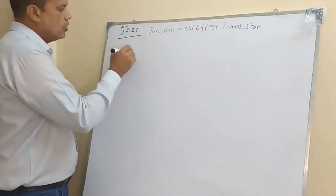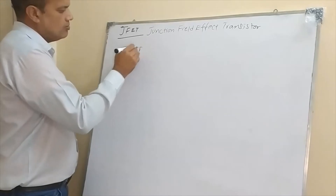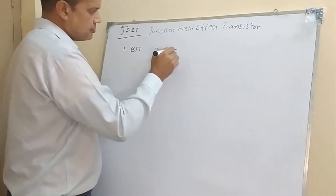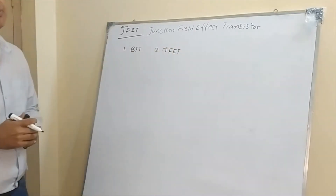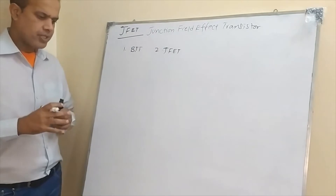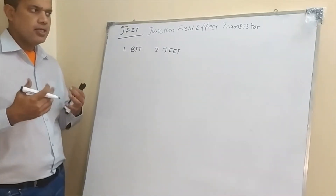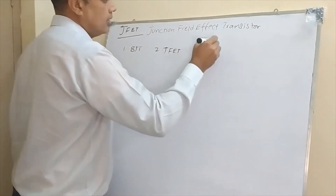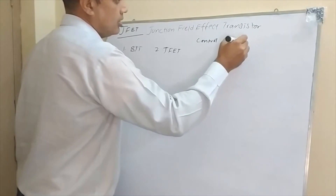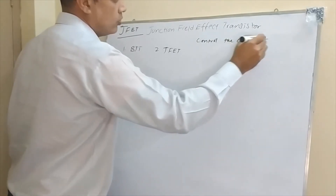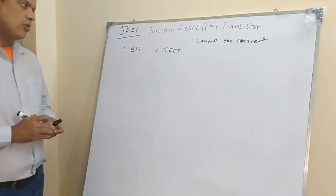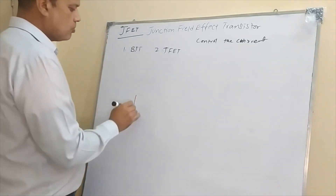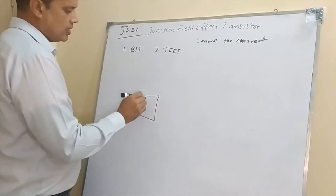These are the two main transistors we see in electronics. They are very important because the phenomenon behind the way they control the current is different in both devices. Whether we talk about the BJT or the JFET, both devices consist of three terminals.